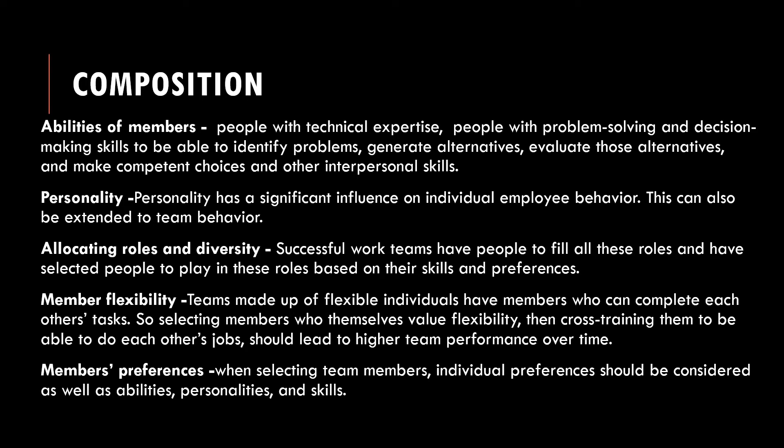The next point is allocating roles and diversity. All successful work teams have people filling all required roles, selected to play those roles based on their skills and preferences. When staffing the members in the team, members should be allocated roles and there should be diversity. Next is member flexibility — a team made up of flexible individuals has members who can complete each other's tasks. Members should be flexible and adaptable, and selected members who themselves value flexibility should be cross-trained to do each other's jobs whenever required.